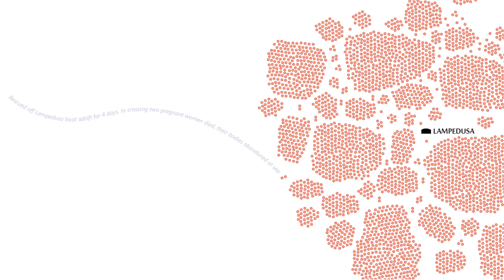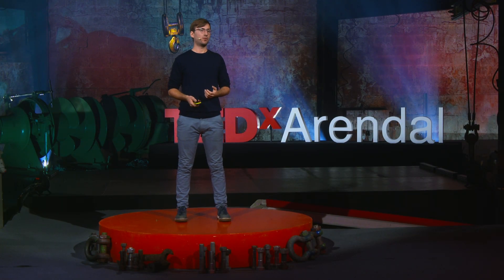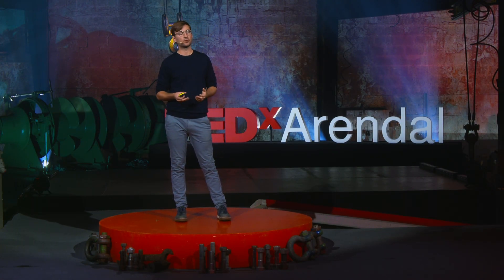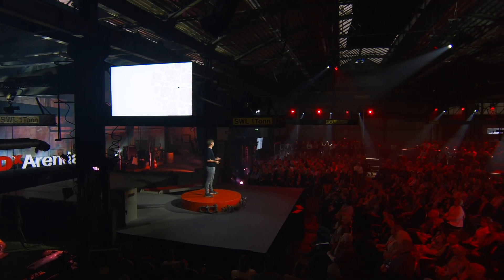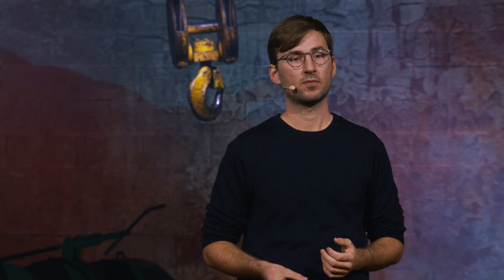Instead of aggregating death counts in proportional circles, I decided to place one point on the page for each death, making the individual bodies visible on the map. Thin blue lines of waving text tell the story of some of the accidents in the database. Here is one of them: rescued off Lampedusa, boat adrift for four days in crossing. Two pregnant women died, their bodies abandoned at sea. It leaves us imagining the untold stories behind all the other thousands of dots on the map, bridging from understanding to empathy.